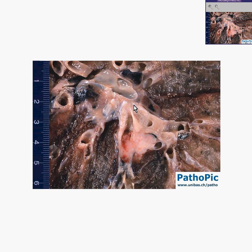Classically, they start in the areas of the lung which have squamous cells or squamous metaplasia, which is usually the large bronchi. You can see a large bronchus here, and it is obstructed by a tumor that shows infiltration into the surrounding tissues.